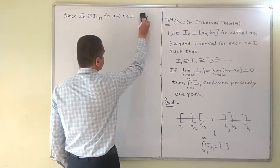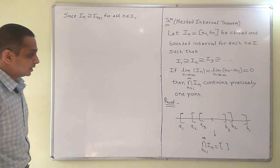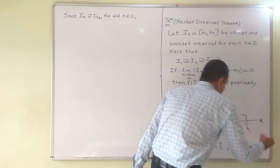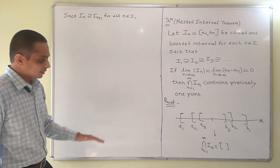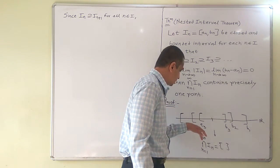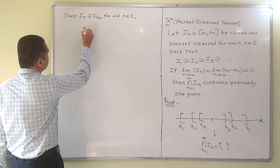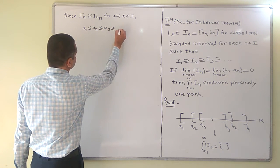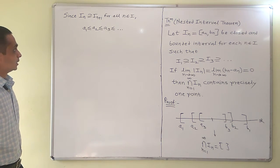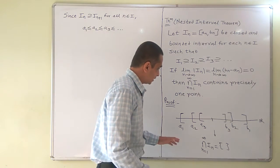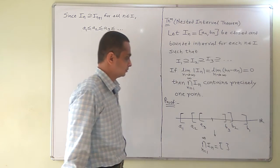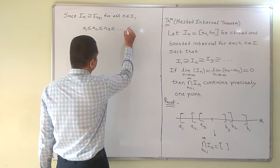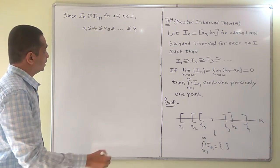we can observe on the real number line R that as we move from left to right, numbers go on increasing. So a_1 ≤ a_2 ≤ a_3 and so on. Also, all these a_n are less than or equal to b_1. This is our first statement.